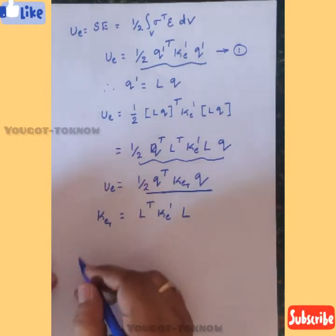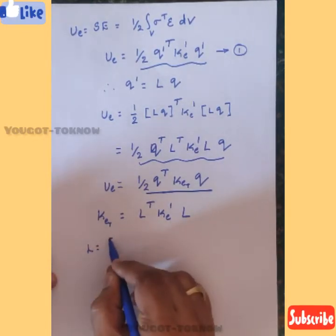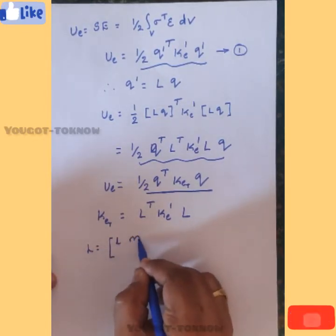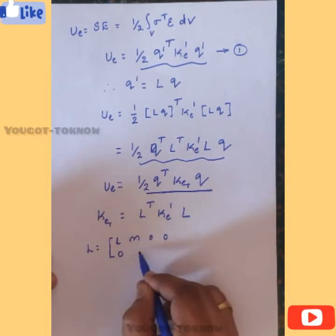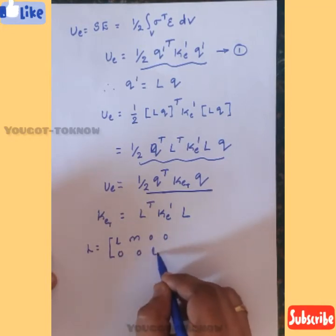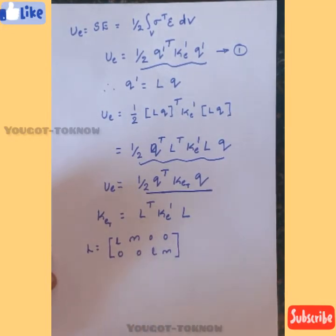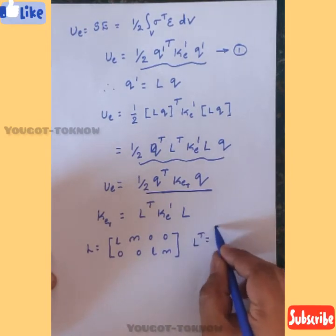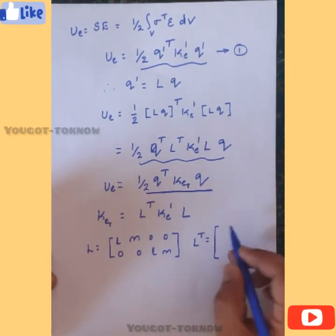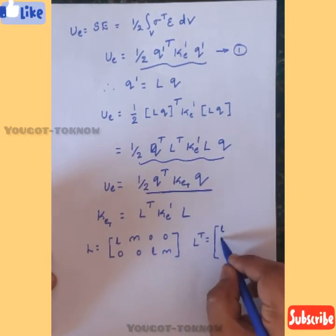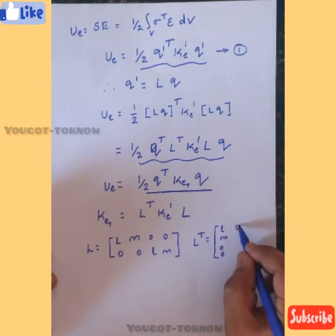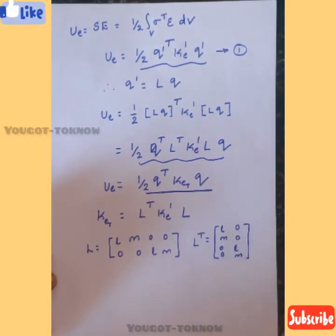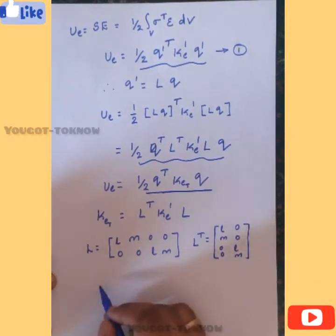Now, what is L_transpose? We know what L is: the transformation matrix L = [l, m, 0, 0; 0, 0, l, m]. L_transpose is obtained by interchanging rows and columns, giving: L_transpose = [l, 0; m, 0; 0, l; 0, m]. Now substitute everything.